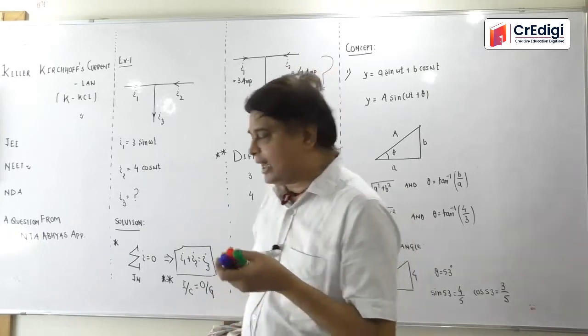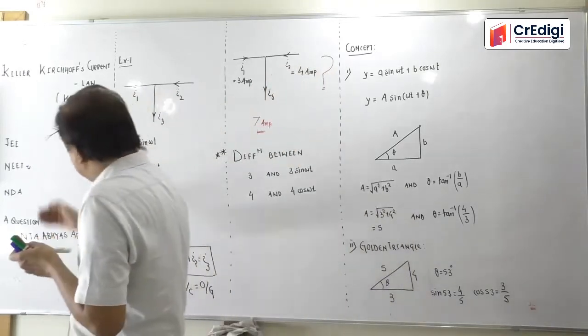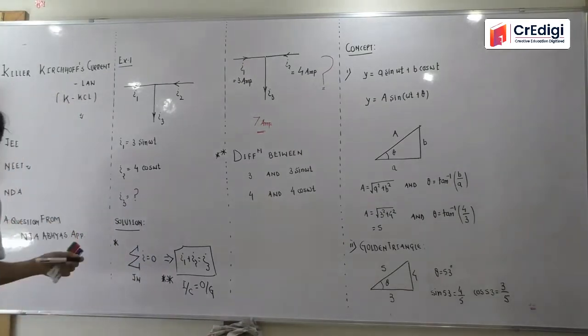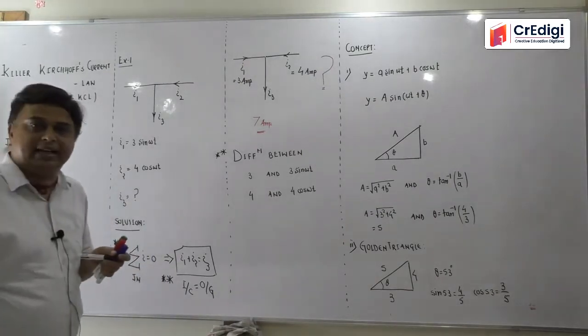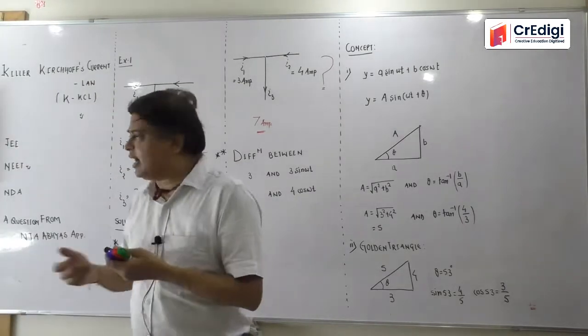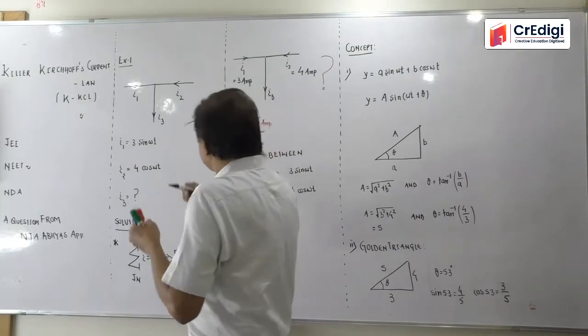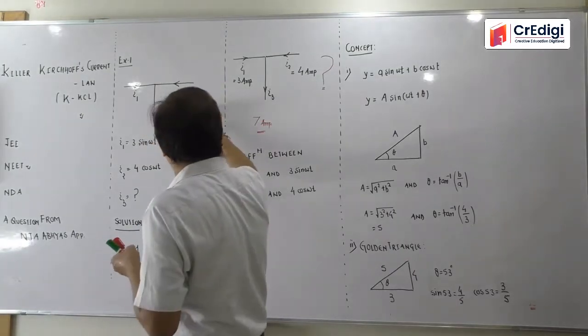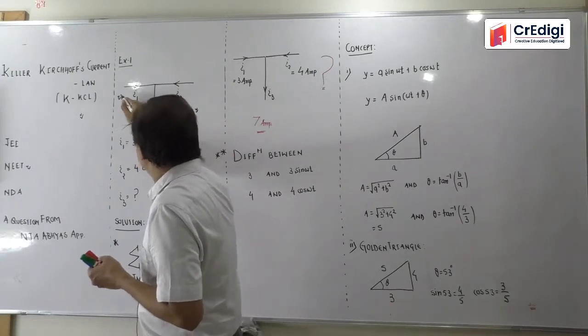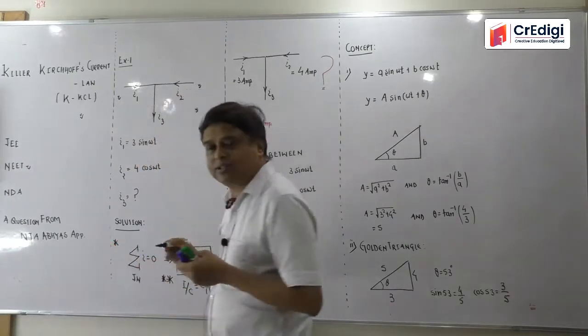This is very important for all of you. I have taken this question from practice. It's a very small question, you may feel it's very quick to do. So it is a circuit which will be shown to you. Three branches are there: in branch one current is I1, in branch two current is I2, and in branch three current is I3.